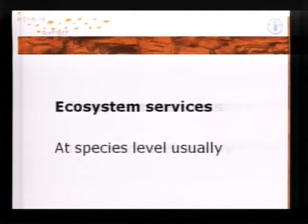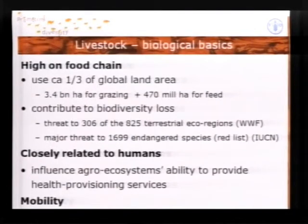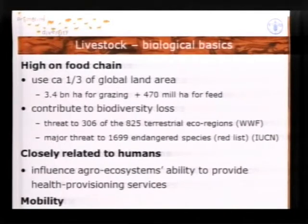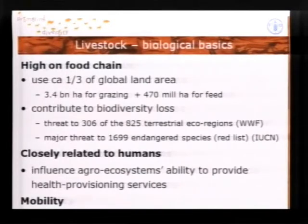Ecosystem services of livestock do exist, but the knowledge is usually at species level only, and this is a gap. There are some biological facts of livestock that determine the interaction of animals with other components of biodiversity. The first is that livestock is high on the food chain, and therefore there are conversion losses. This means the livestock sector overall occupies about one-third of the global land area for feeding.